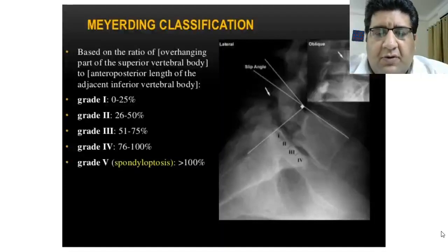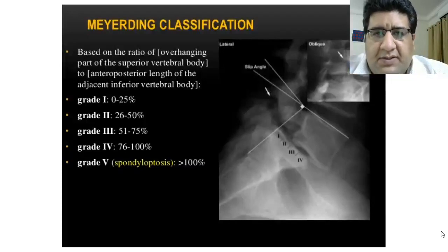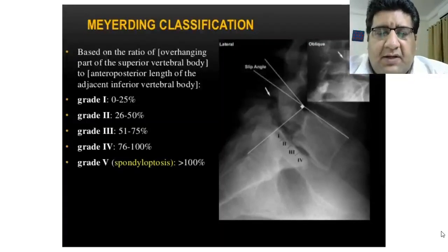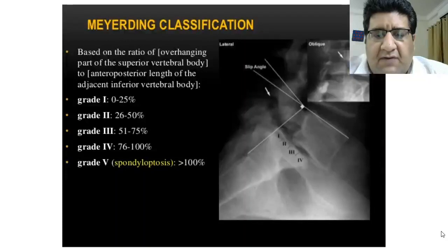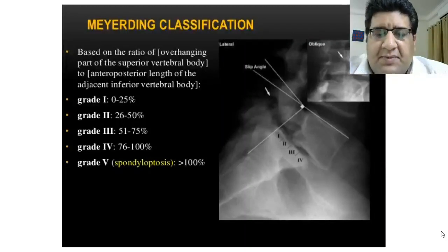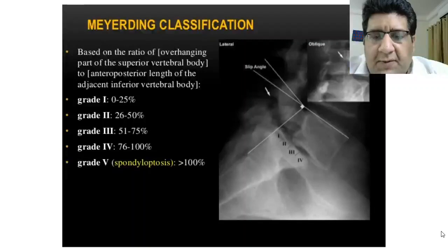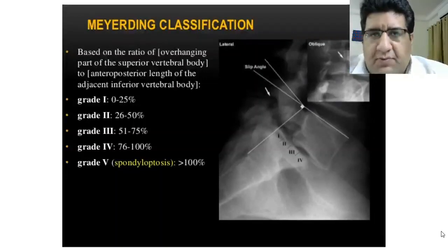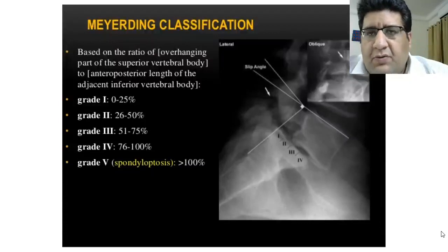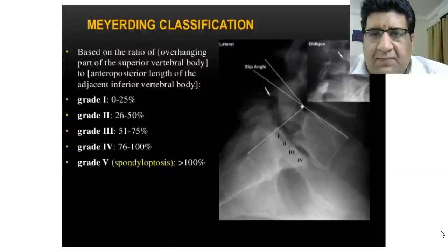The four equal quadrants each represent 25%. You then assess how much of the overhanging part occupies the quadrants. Grade 1 is 0–25%, Grade 2 is 26–50%, Grade 3 is 51–75%, and Grade 4 is 76–100%. The most interesting category is more than 100%, which is called spondyloptosis — meaning there is complete slippage with no contact or overlap between the two vertebral bodies. That is the worst outcome.